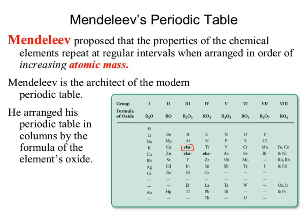What does 'eka' actually stand for? It refers to the element being similar in origin to a known element. So the first box, I believe, is known as eka-aluminum, because it's referenced as being similar to aluminum in its characteristics.